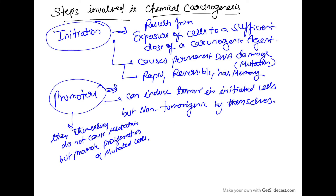Now talking about the steps involved in chemical carcinogenesis, there are two important steps: initiation and promotion. What happens in initiation is it results from the exposure of the cell to a sufficient dose of a carcinogenic agent. The cell is exposed to the carcinogenic agent and it causes permanent DNA damage — it causes mutation.